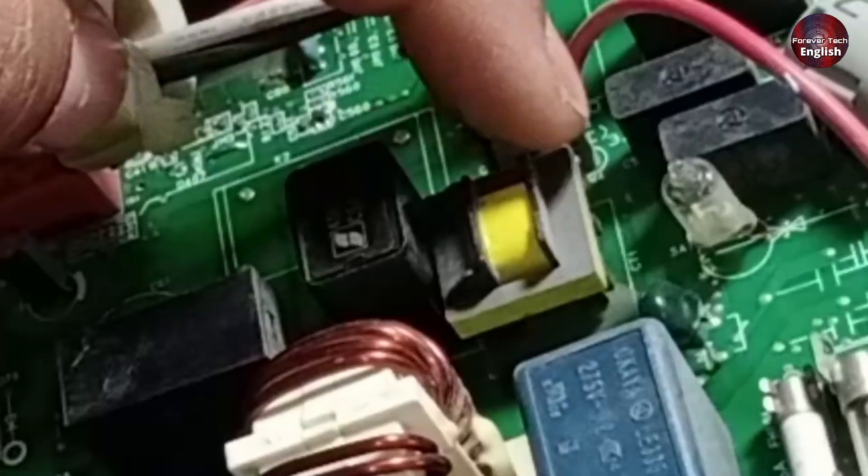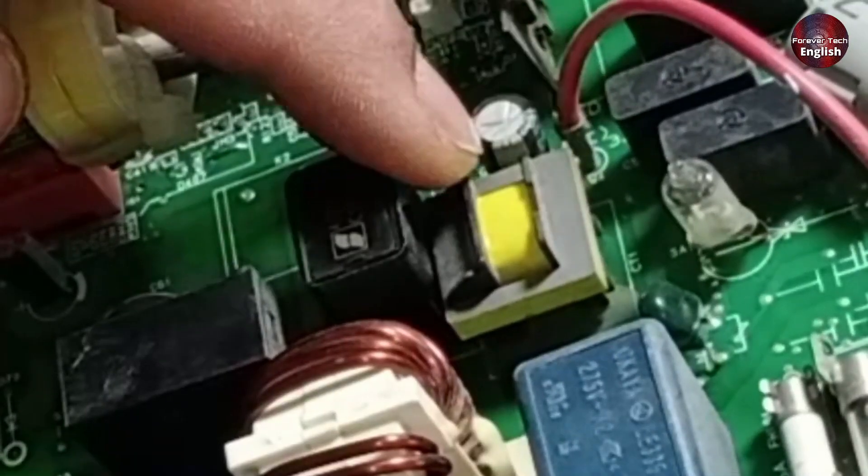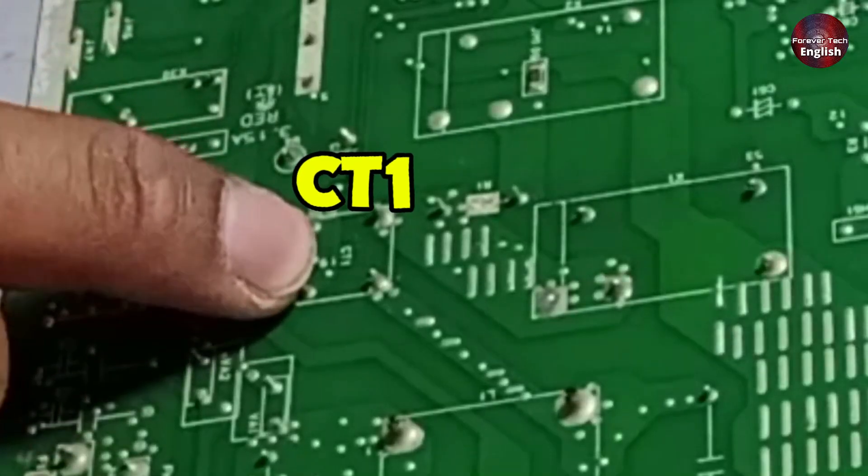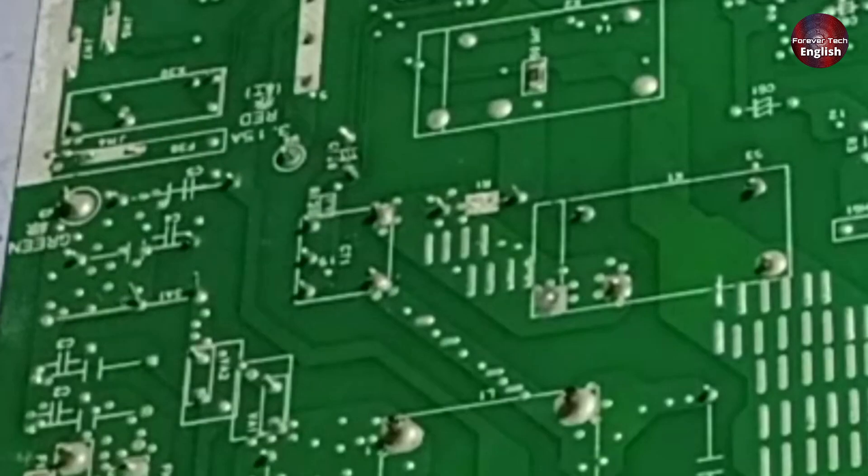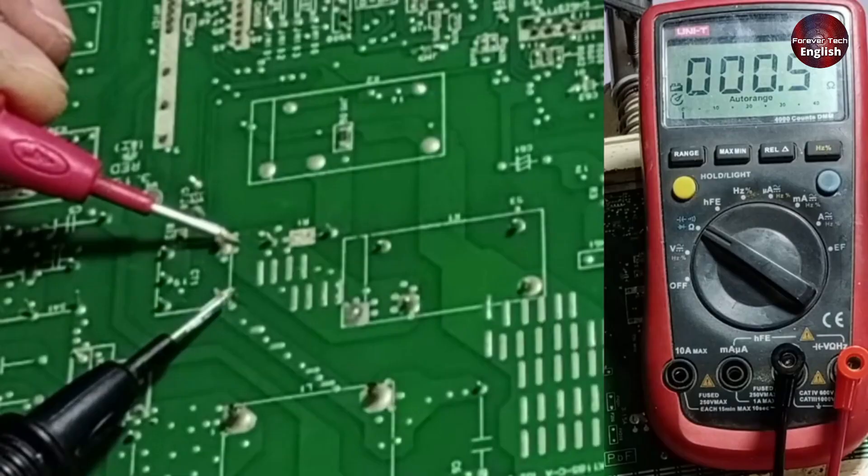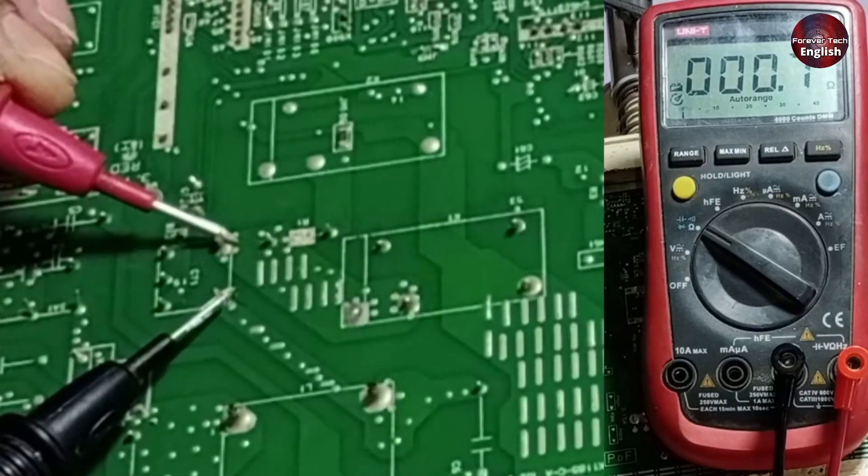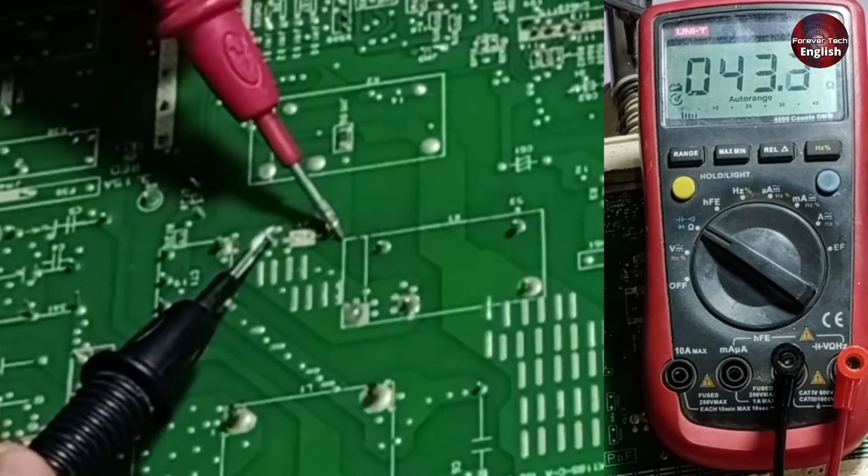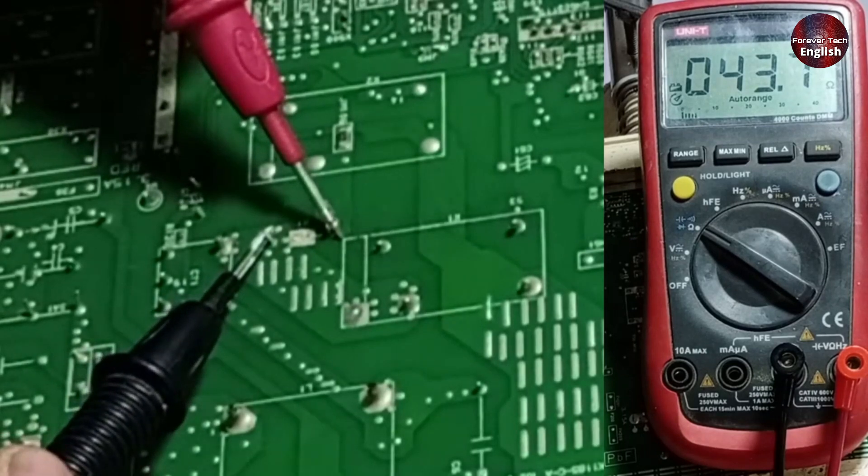Next, we have the PTC sensor and a transformer-like component attached. Now let's turn it around and check its position. Here we see CT1 and then R1. We will test both of them, so we place the meter here. We should get some ohms here, and we are getting 0.7 ohms. After that, when we check the PTC sensor, we are getting 43 ohms, which means the PTC sensor is completely fine.